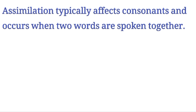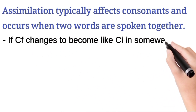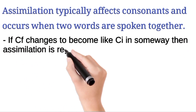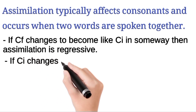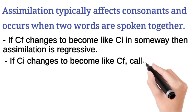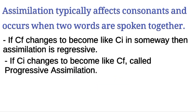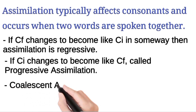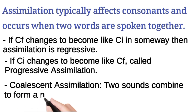Assimilation occurs when two words are spoken together. There are key types to remember. If the final sound (CF) changes to become like the initial sound (CI) of the next word, that is regressive assimilation — the last sound of the first word changes to match the first sound of the second word. If the initial sound (CI) changes to become like the final sound (CF) of the previous word, this is progressive assimilation. Third is coalescent assimilation, where two sounds come together and join to form a new sound.